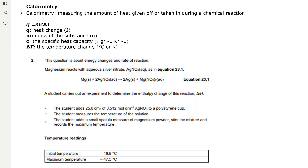Calorimetry is defined as measuring the amount of heat given off or taken in during a chemical reaction. We use the formula Q = MCΔt to find the heat change in a reaction, which we can then use to find the enthalpy change. Q represents the heat change in joules; M represents the mass of the substance in grams; C is the specific heat capacity, which is given on the datasheet as 4.18; and ΔT is the temperature change, which we can measure in either degrees Celsius or Kelvin.